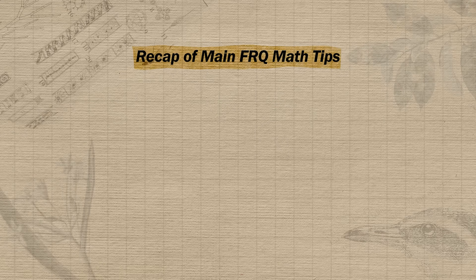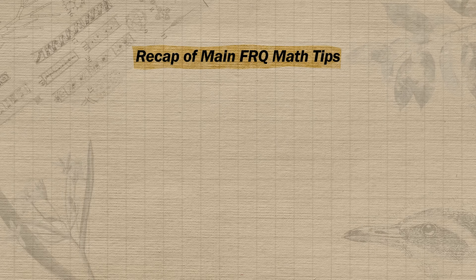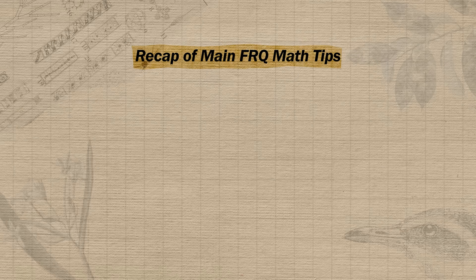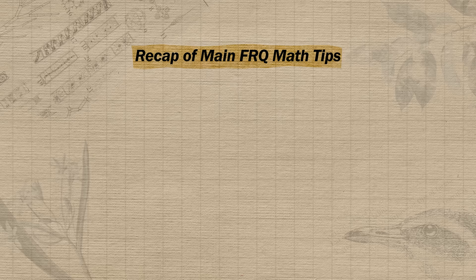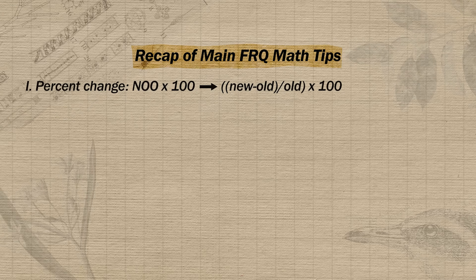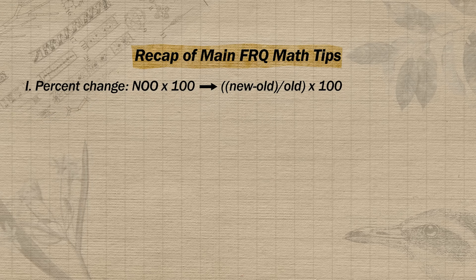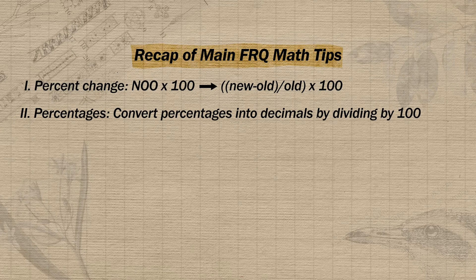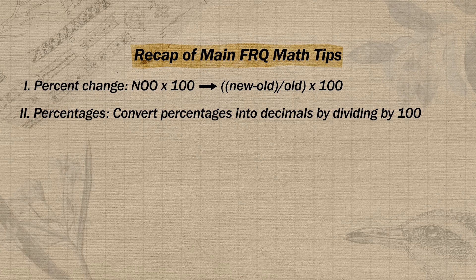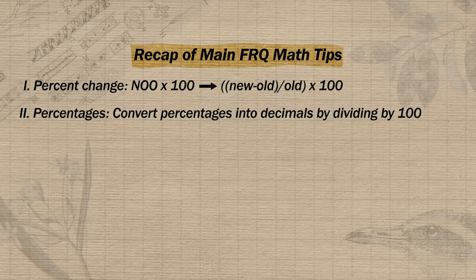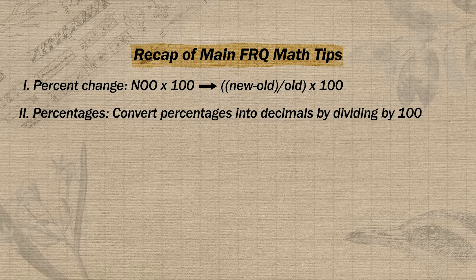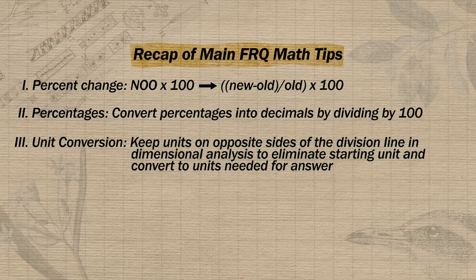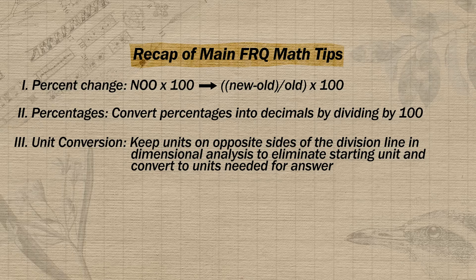As a quick recap: based on the 2021 released FRQs, the three most important types of math problems are percent change, percentages in general, and unit conversion. For percent change, remember new minus old over old times 100. For percentages, remember to divide by 100 to convert into decimals. And for dimensional analysis, remember to place units on opposite sides of your division line to cross them off and arrive at your final answer units.